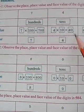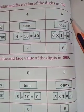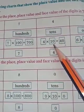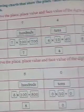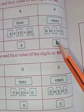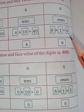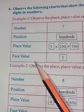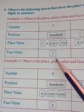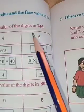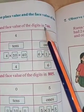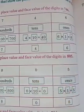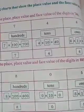4 is in tens place, so 4 into 10. Four tens are 40, so 4 place value is 40. Place value of 4 is 40. Remember it children, very important. Place value of 4 is 40. 6 is in ones place: 6 into 1, so 6 ones are 6. Now for face value: face value of 7 is 7 only, face value of 4 is 4, face value of 6 is 6.